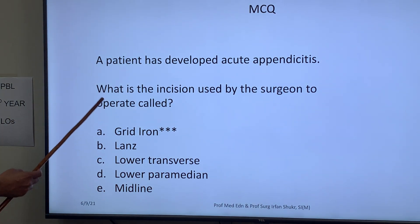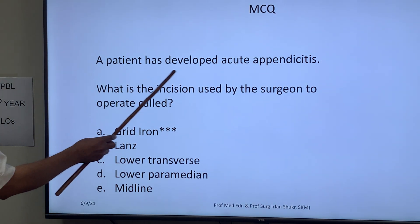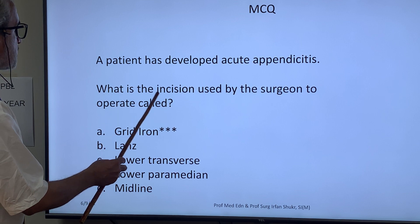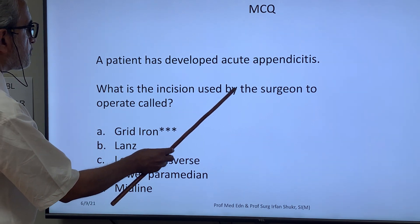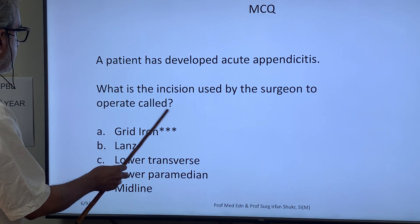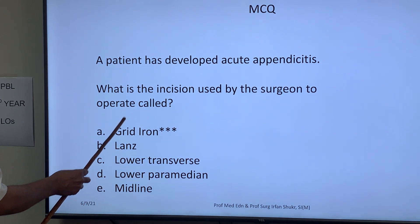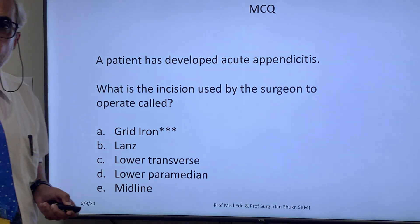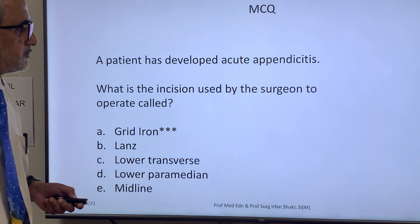This is an MCQ example: 'A patient has developed acute appendicitis. What is the name of the incision used by the surgeon for the operation?' The options are provided. This is an example of a multiple choice question.